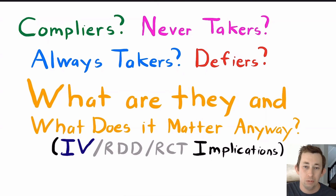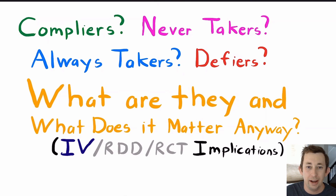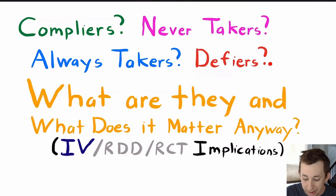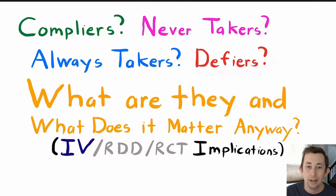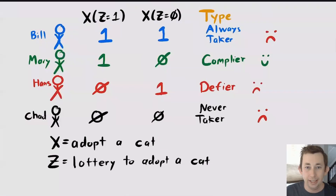We'll focus today on how they relate to an IV estimate. Particularly, we'll talk about key characteristics of each type so you can tell them apart, how you might calculate the percentage of people in a population that are of each type, and how defiers can mess up your IV estimate. Timestamps are below if you'd like to jump around.